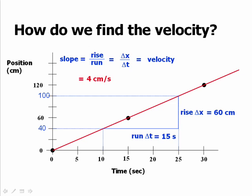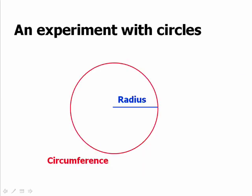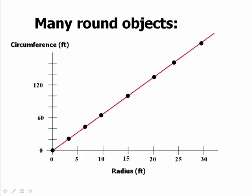Suppose you were to just collect circular objects, anything you find that is circular, and for each object you measure its radius and its circumference—bottle caps, dinner plates, silver dollars, pizza, whatever you find. If you were to plot all of those data points on a graph where the vertical axis was circumference and the horizontal axis was radius, you would find that all of your circular objects appeared as dots on a single straight line.